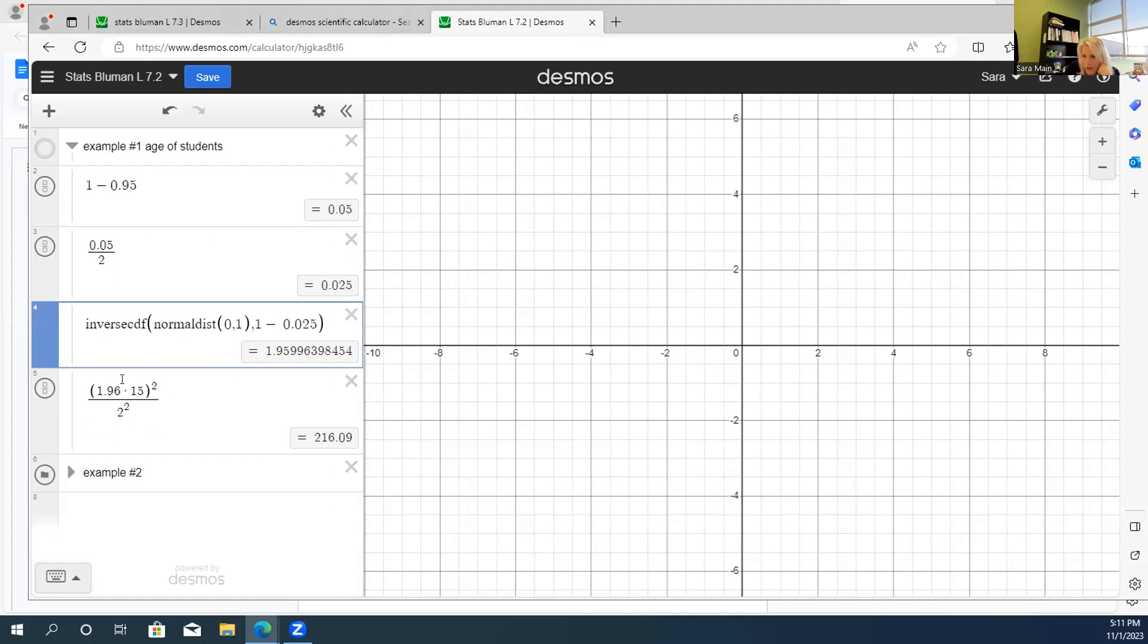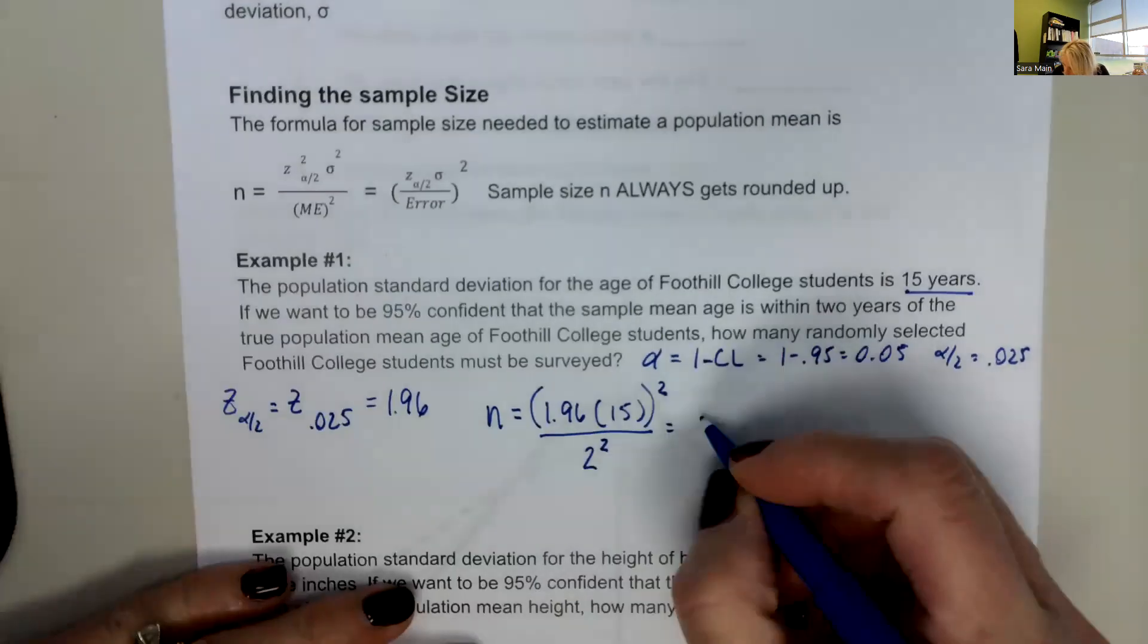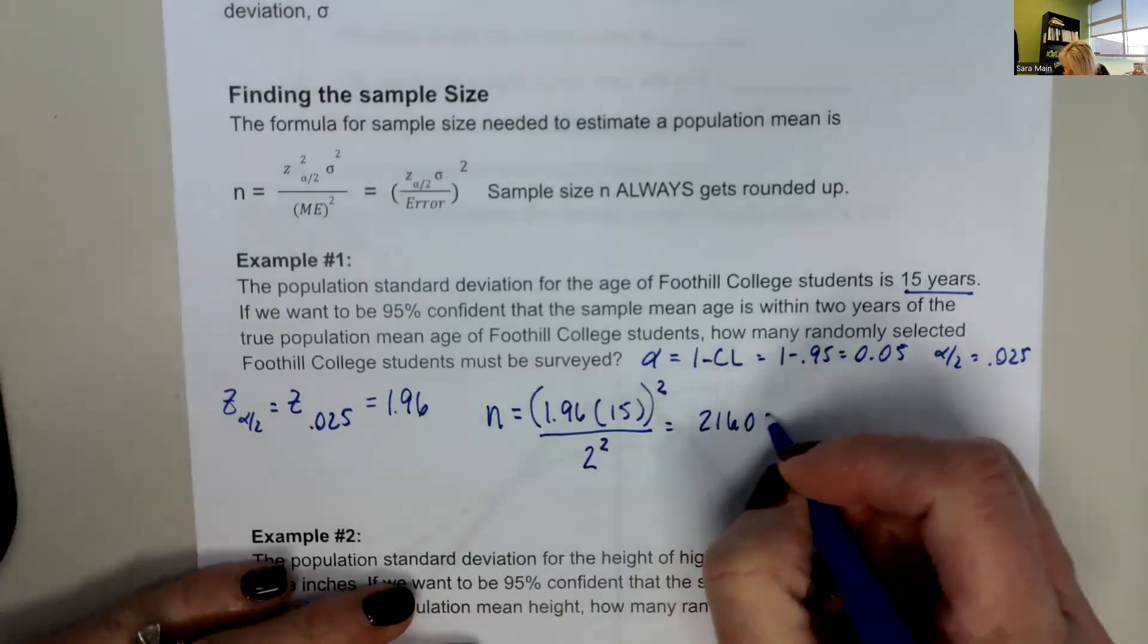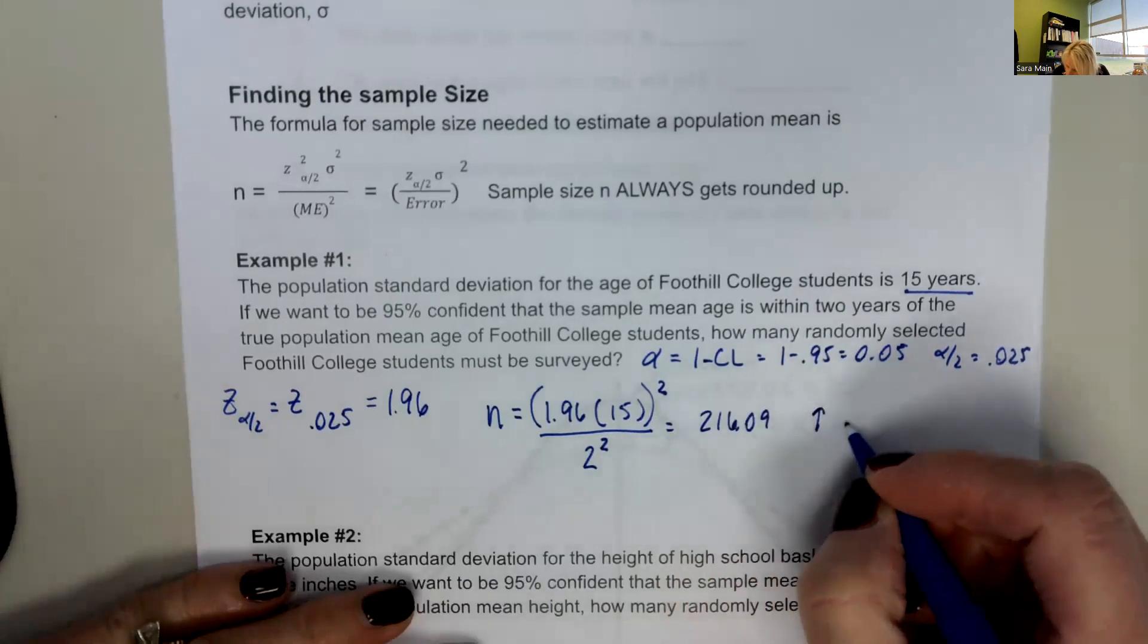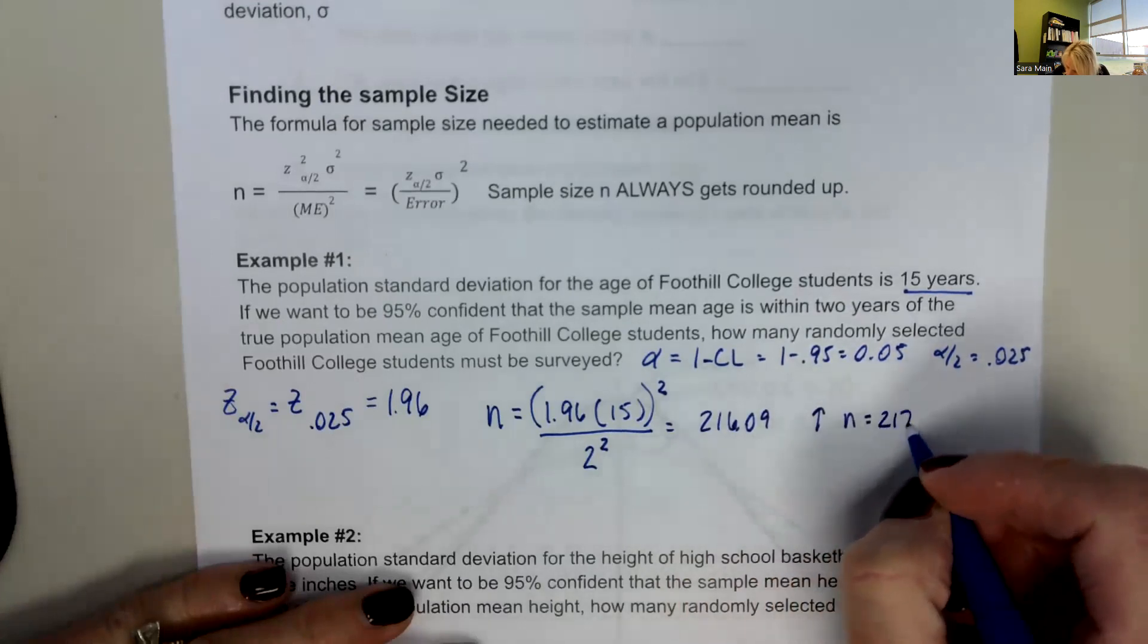So in my formula, I have 1.96 times 15, that quantity squared divided by the error squared, 2 squared. So this comes out to be 216.09. So this is equal to 216.09. And we always round up. So n is going to be 217.